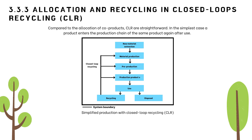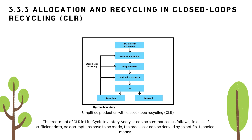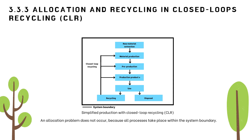Compared to the allocation of co-products, closed-loop recycling (CLR) is straightforward. In the simplest case, a product enters the production chain of the same product again after use. A 100% effective CLR makes disposal unnecessary and reduces raw material requirements. Examples of CLR include production scraps such as thermoplasts, glass, and metals, which by melting can be channeled back into the production process. In CLR, no allocation problem occurs because all processes take place within the system boundary.